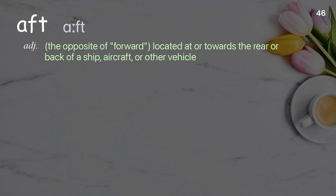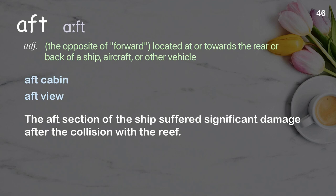Aft: the opposite of forward; located at or towards the rear or back of a ship, aircraft, or other vehicle. Examples: aft cabin; aft view. The aft section of the ship suffered significant damage after the collision with the reef.